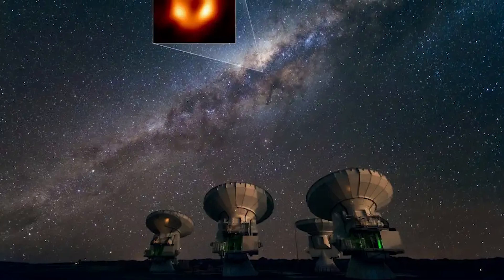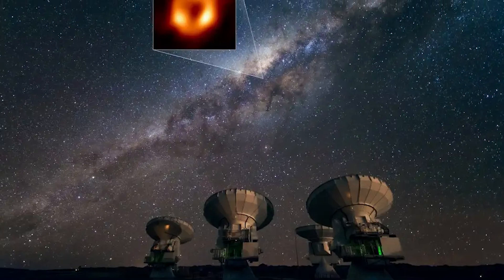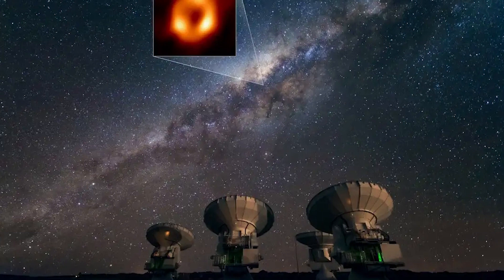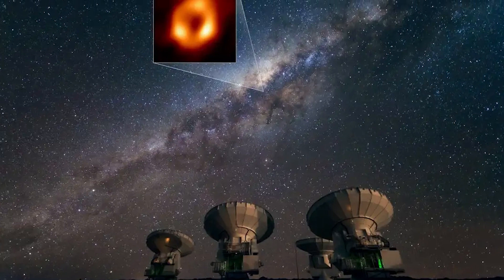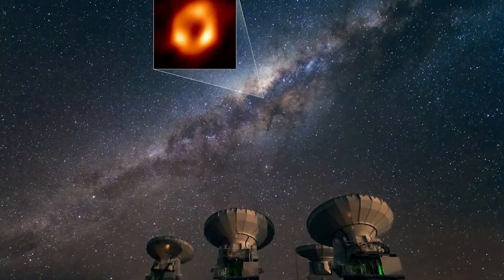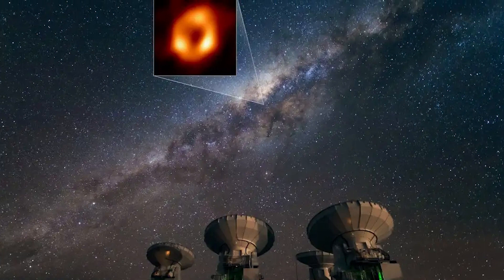Only recently, in 2019, was the Event Horizon Telescope able to produce the first-ever image of an active black hole and its surface, which was at the centre of a galaxy known as Messier 87.